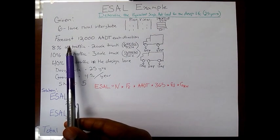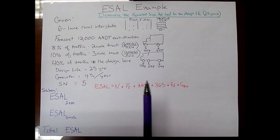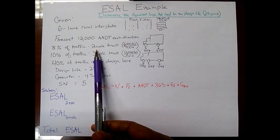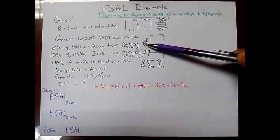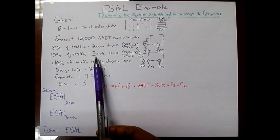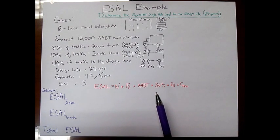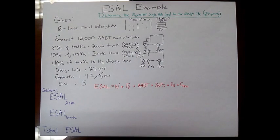It is forecast that there will be about 12,000 vehicles that travel on that road in each direction. Of that 12,000, 8% of them will be a two-axle truck that kind of looks like this, and each one of those axles carries about 6,000 pounds. You also have 10% of that 12,000 that is made up of a three-axle truck which is transferring 12,000 pounds per axle to the ground. The rest of the percentage is made up by passenger cars, which when doing ESAL problems, the amount of load transferred from a car is so small that it's negligible.